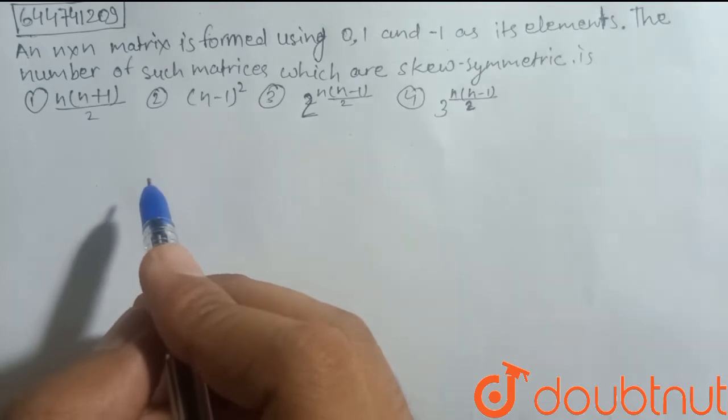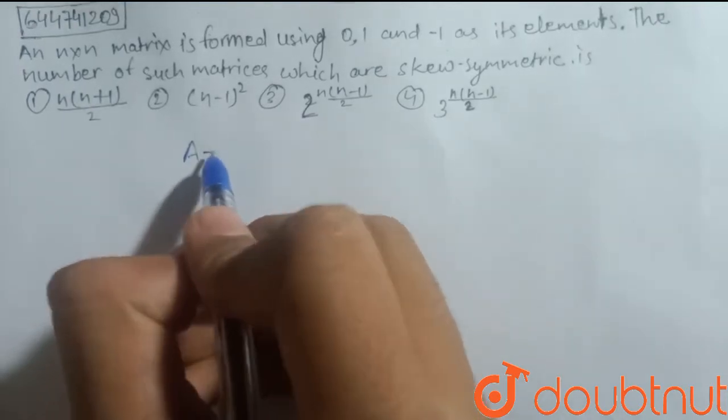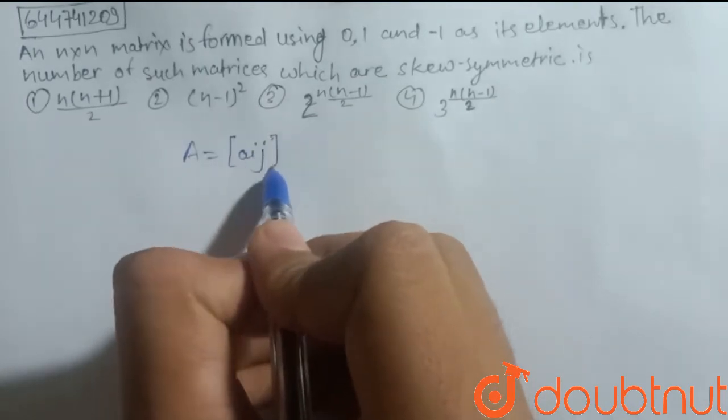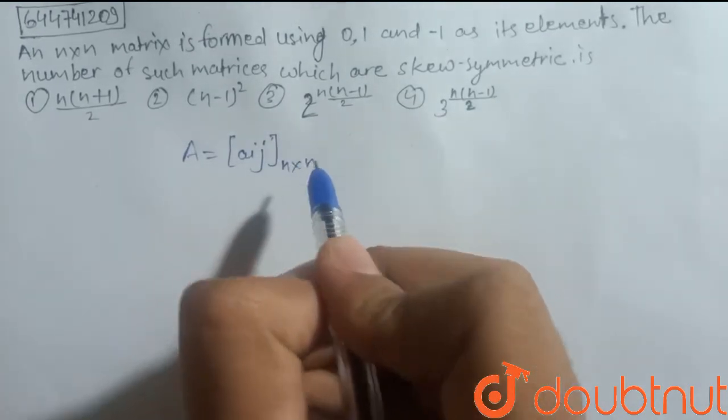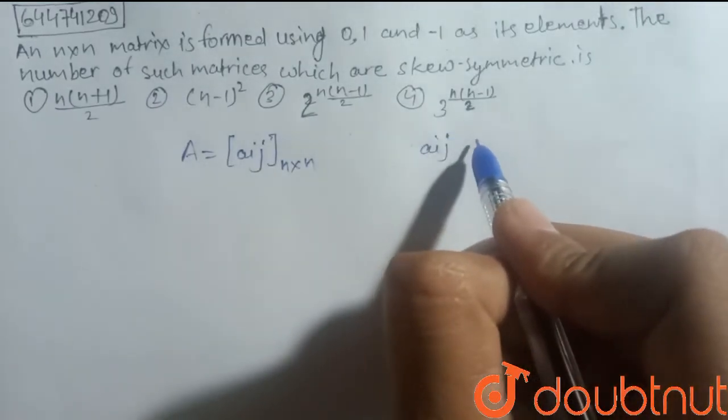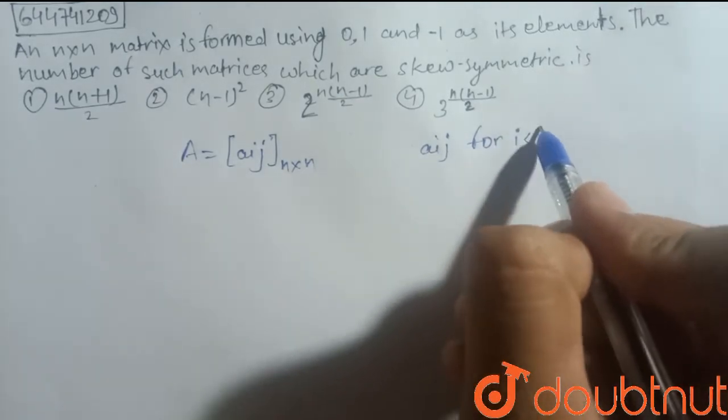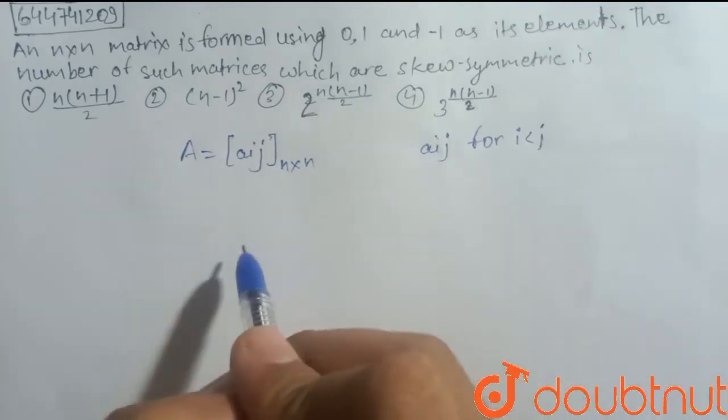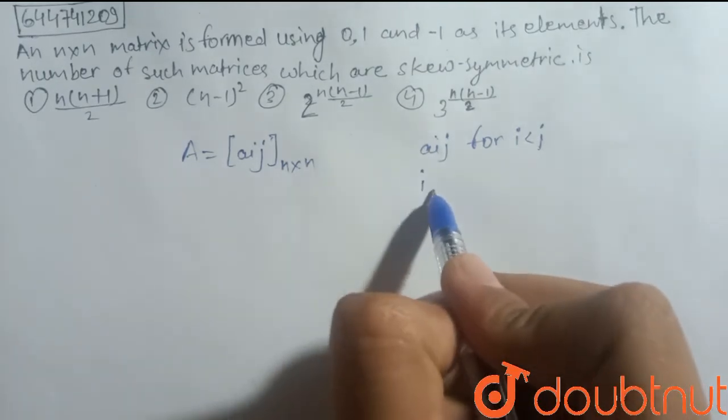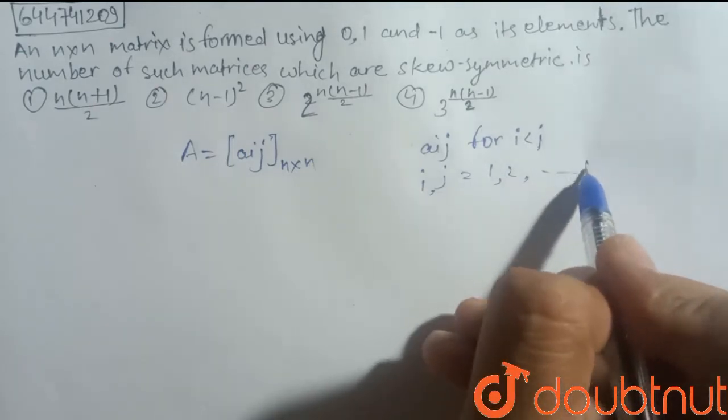For the matrix, here A is equal to aij of order n into n, where aij for i is less than j, and i, j is equal to 1, 2 up to n.